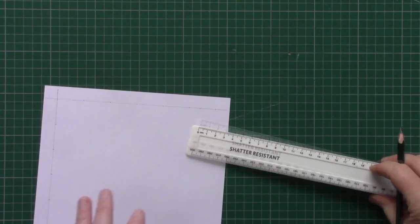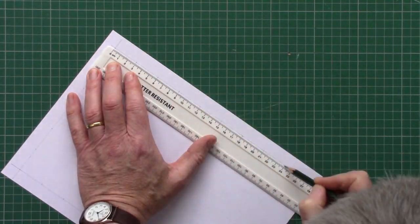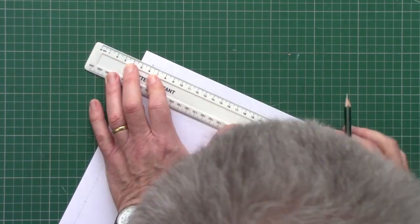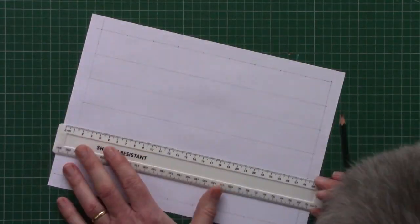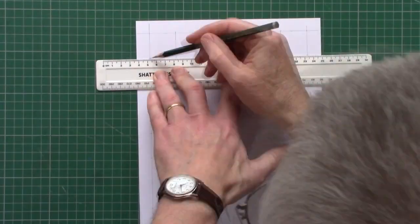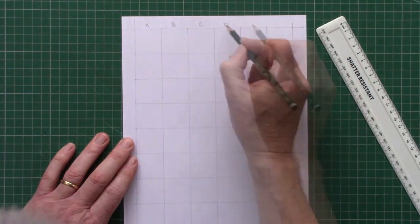First we need to draw a grid. I draw a line 15mm from each edge and then draw a grid 6 squares wide by 9 squares deep. Each box is 30mm square. I label A to F along the top and the bottom and 1 to 9 down the sides.